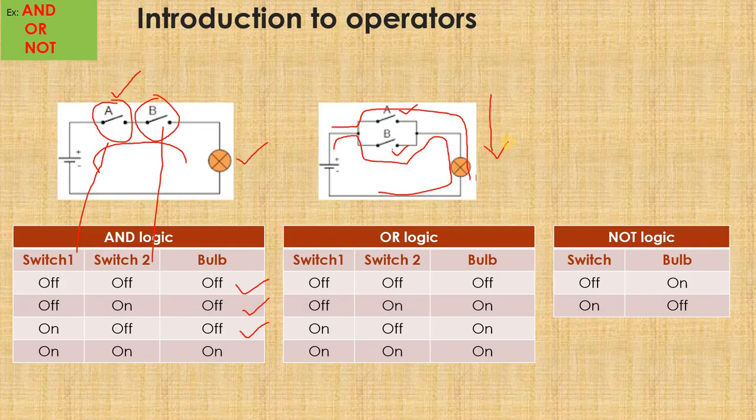Please observe, in both AND logic and OR logic, I had two inputs, switch 1 and switch 2. But in case of a NOT logic, it has only one switch, or only one input.